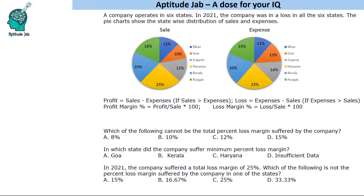The first question asks: which of the following cannot be the total percentage loss margin suffered by the company? Since the company had a loss in all six states, that means in every state expenses are greater than sales — so in every state E will be greater than S.